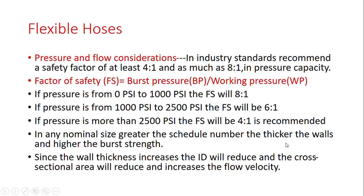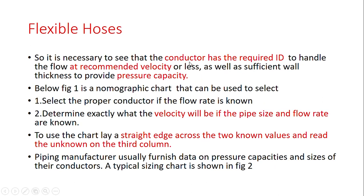In any nominal size, a greater schedule number means a thicker wall thickness and a higher pressure rating. However, since wall thickness increases, the ID is reduced, the cross-sectional area decreases, and the flow capacity decreases. It is therefore necessary to select the conductor with the required ID to handle the required flow at the recommended velocity or less.